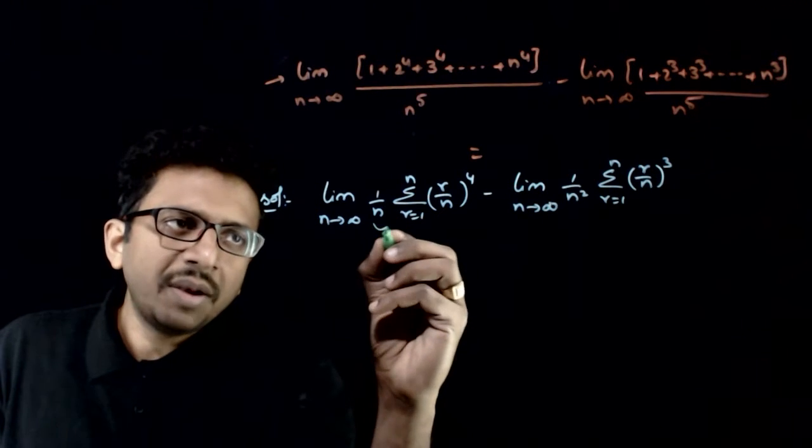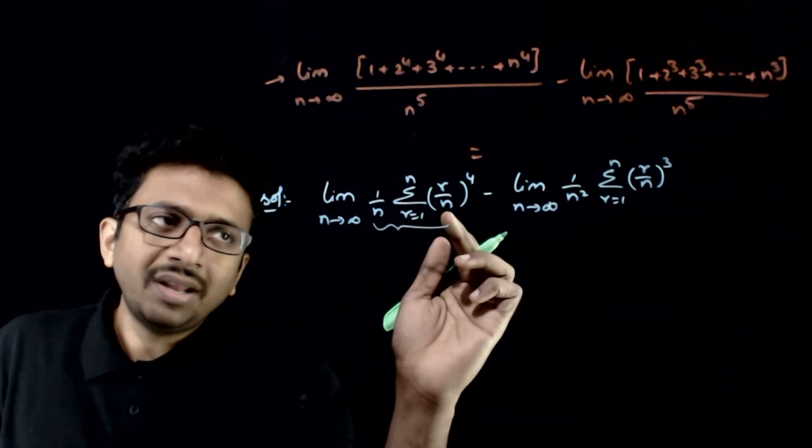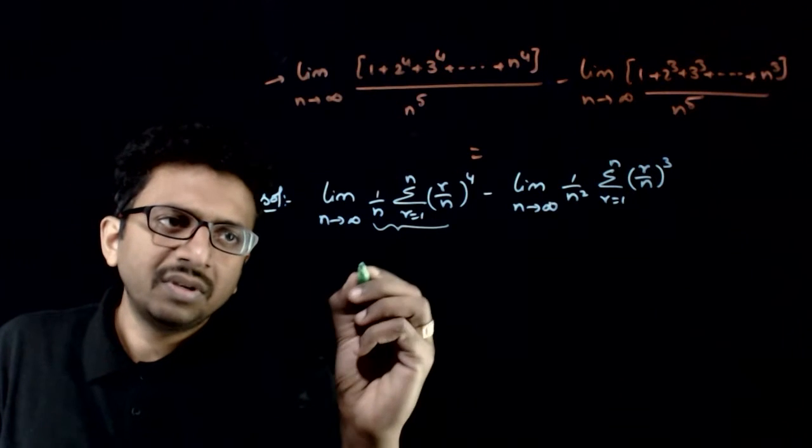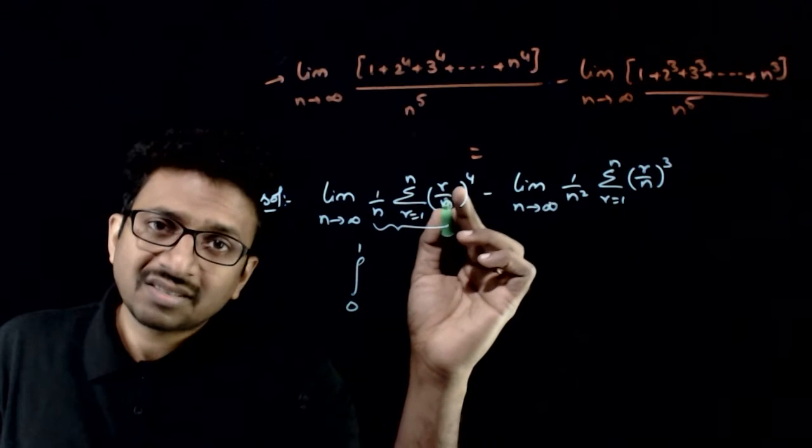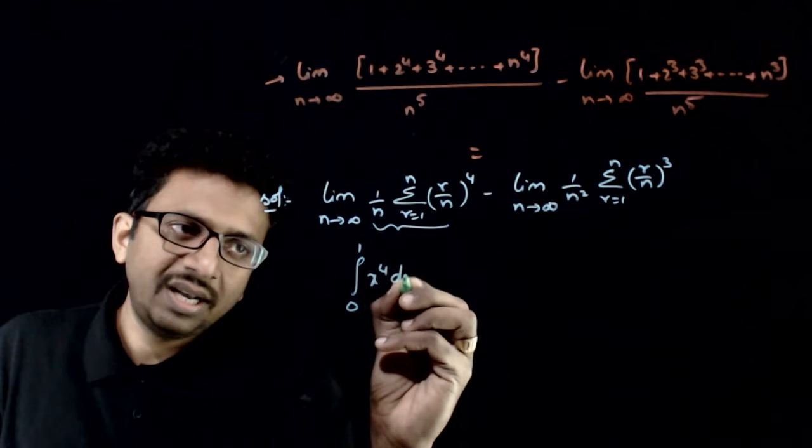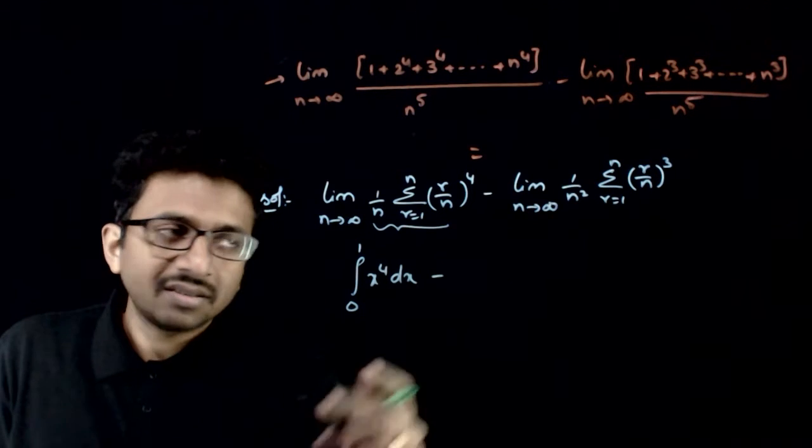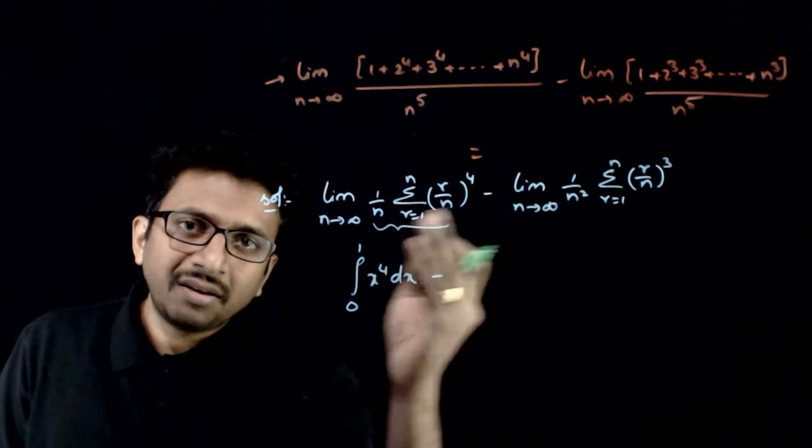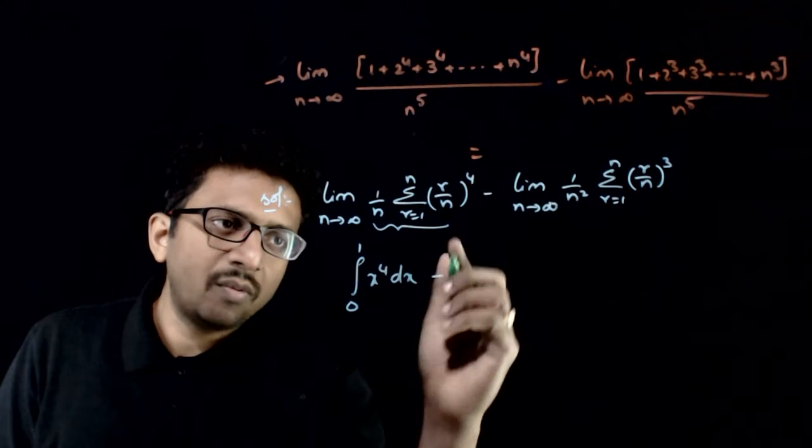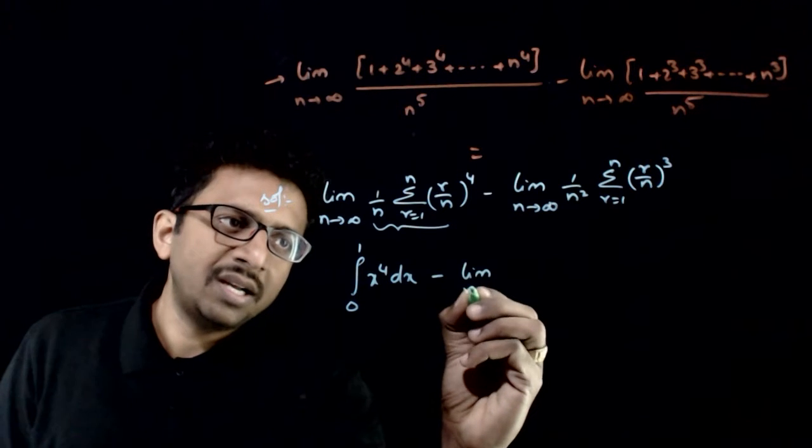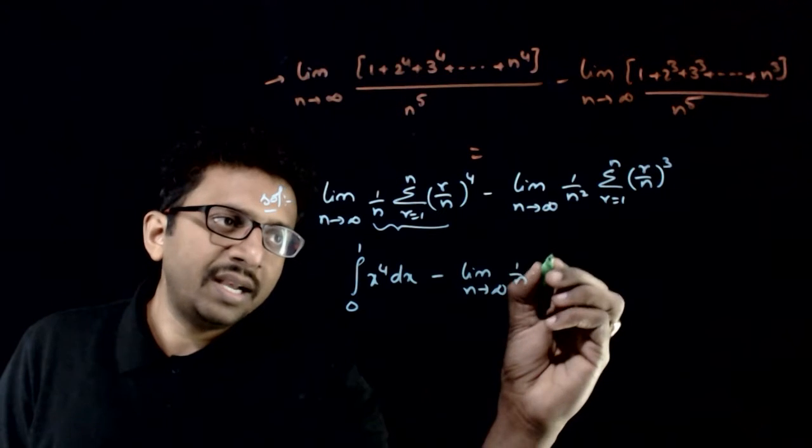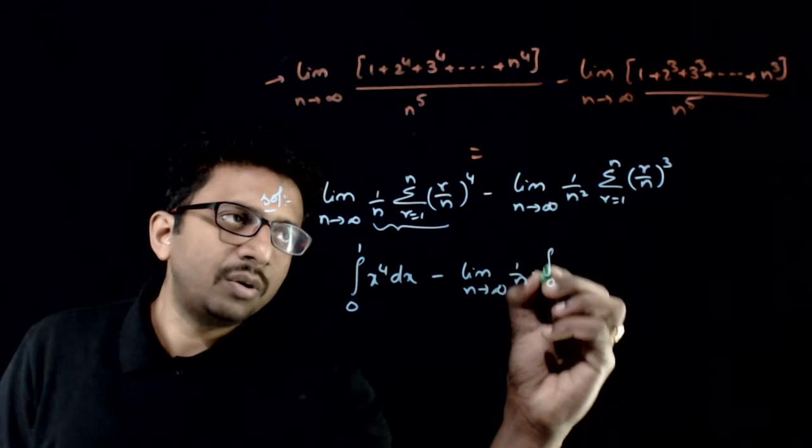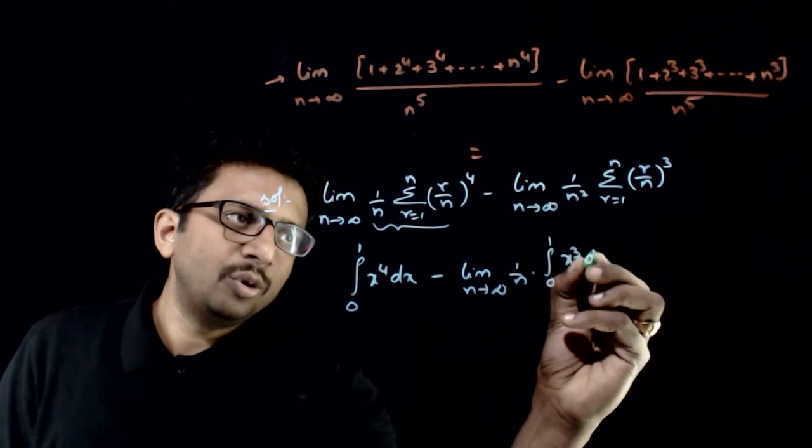We know that 1/n times sigma r equals 1 to n of f(r/n) equals the integral from 0 to 1 of f(x)dx. That is, the integral from 0 to 1 of x^4 dx minus - you need 1/n for the formula application - so take 1/n outside, giving limit as n tends to infinity of 1/n times the integral from 0 to 1 of x^3 dx.